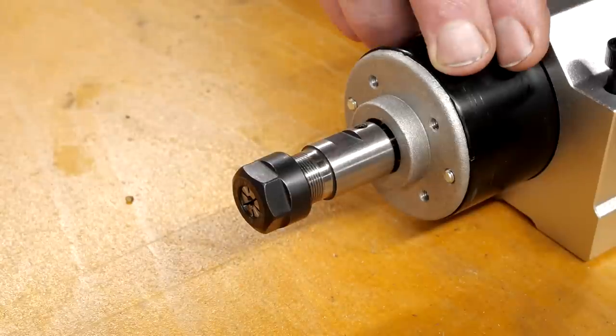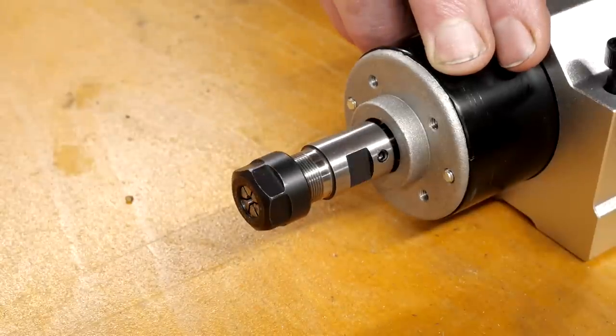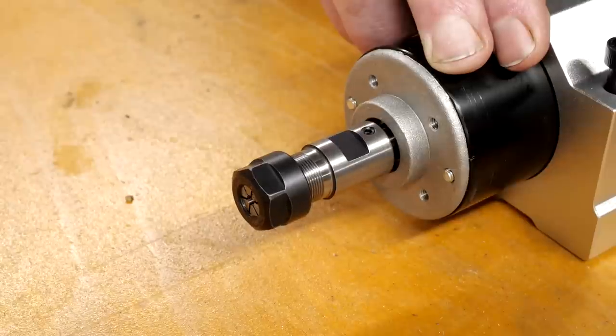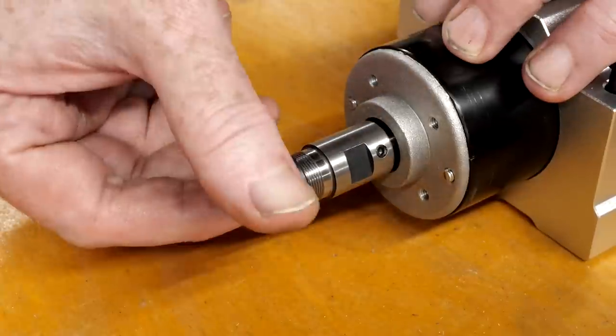The spindle comes pre-fitted with this ER11 collet chuck, and an 1⁄8 inch collet is included. It seems to be snugly fitted to the spindle shaft, and solidly held by the two opposing grub screws.